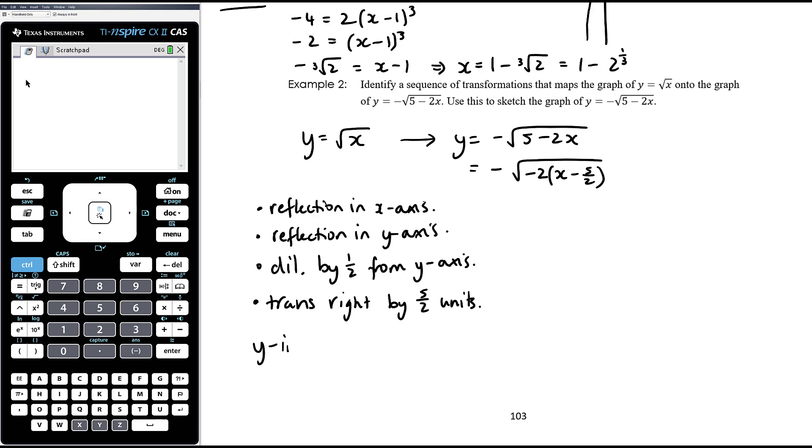Alright, so let's calculate the y-intercept, let x equal 0, it's going to be negative square root of 5 minus 0, so it's negative root 5. So (0, negative root 5) and (5/2, 0).